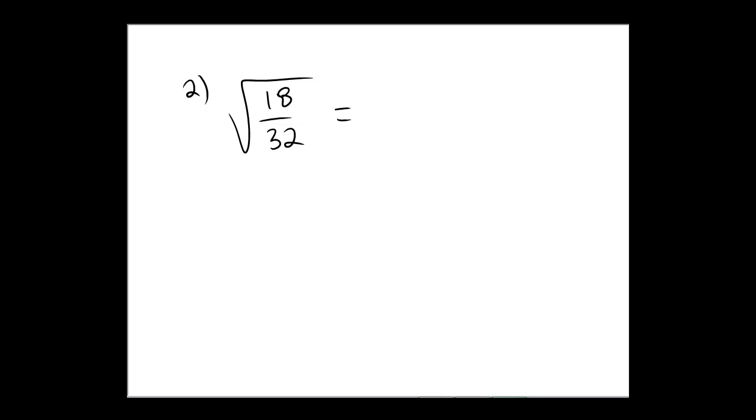So 18 and 32, first of all, what's the greatest common factor that goes into 18 and 32 and allows me to reduce the fraction? Well, that would hopefully be the number 2. 2 goes into the top and 2 goes into the bottom. 18 divided by 2 is 9, 32 divided by 2 is 16.